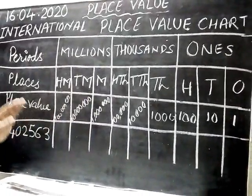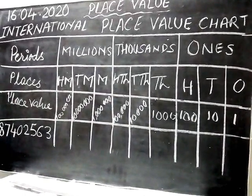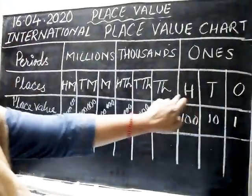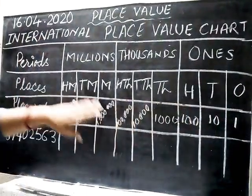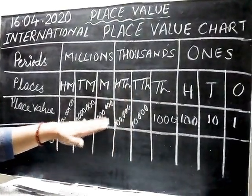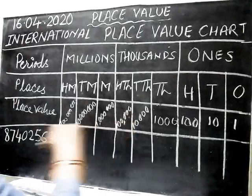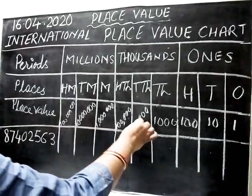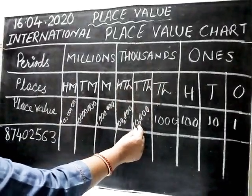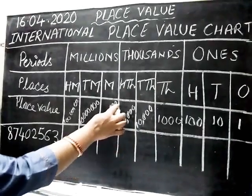Now we have studied that we mark larger numbers according to their period in the Indian place value chart. Similarly here, each period contains three places — ones, tens, hundreds. So up to the ones period we put a comma after three digits. As soon as numbers start becoming larger we start putting commas. Ones, tens, hundreds — comma. Then thousands, ten thousands, hundred thousands together — they are in the same period.